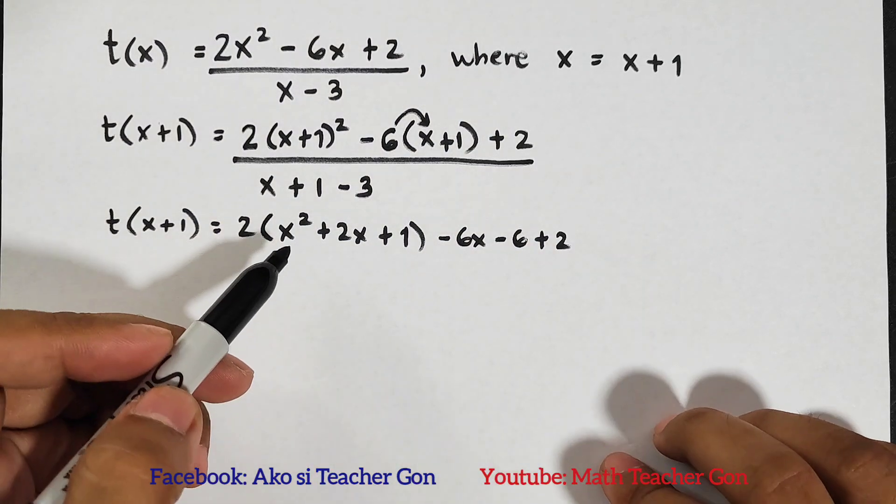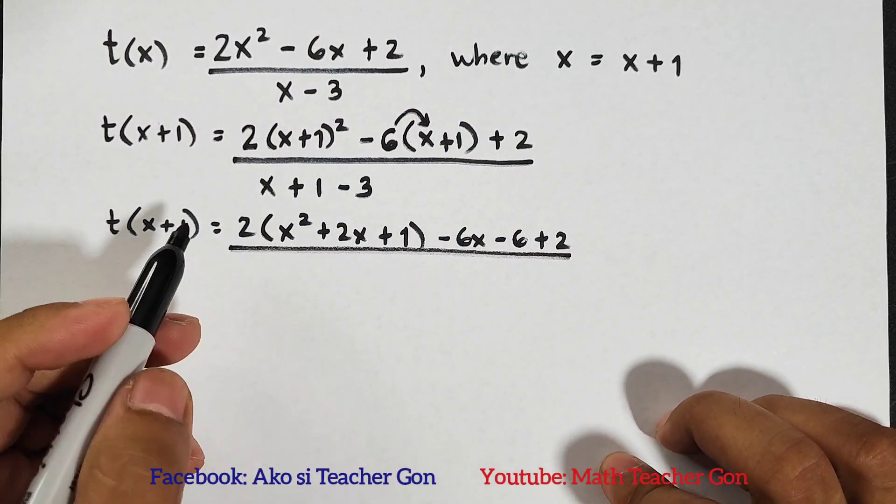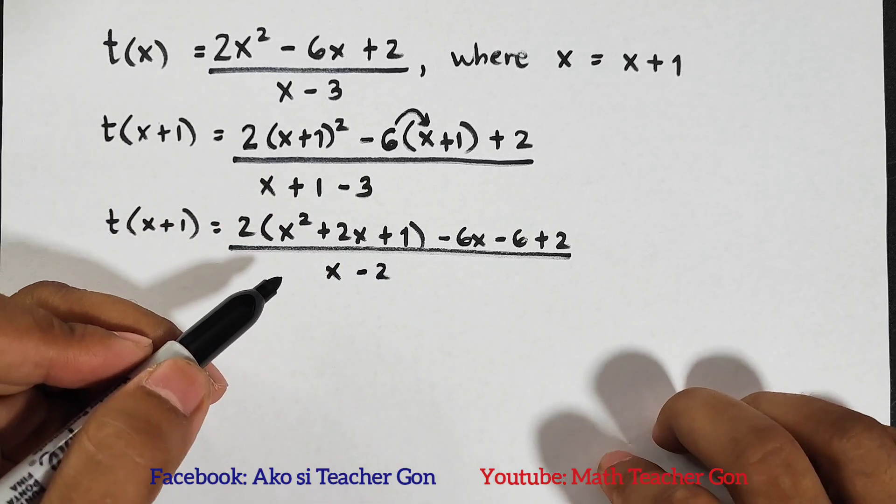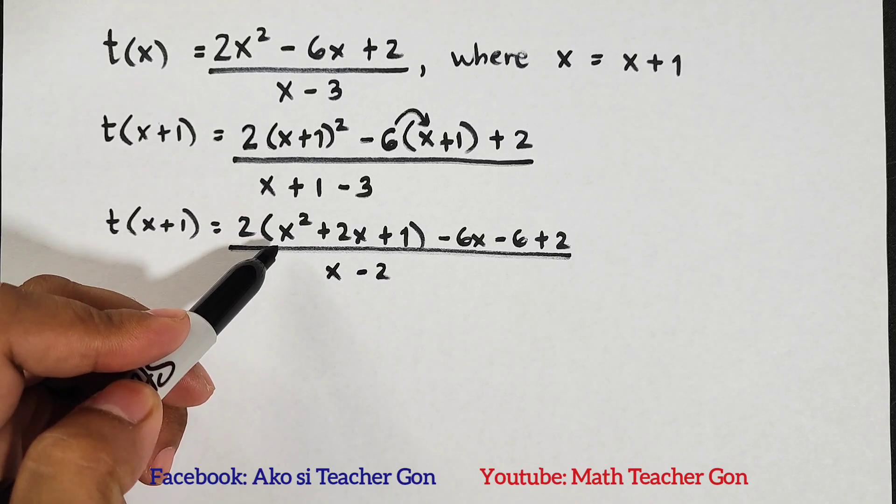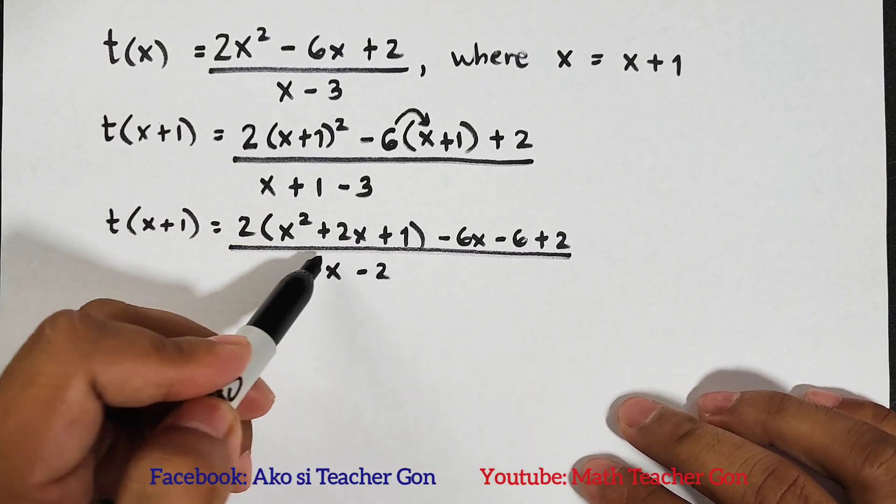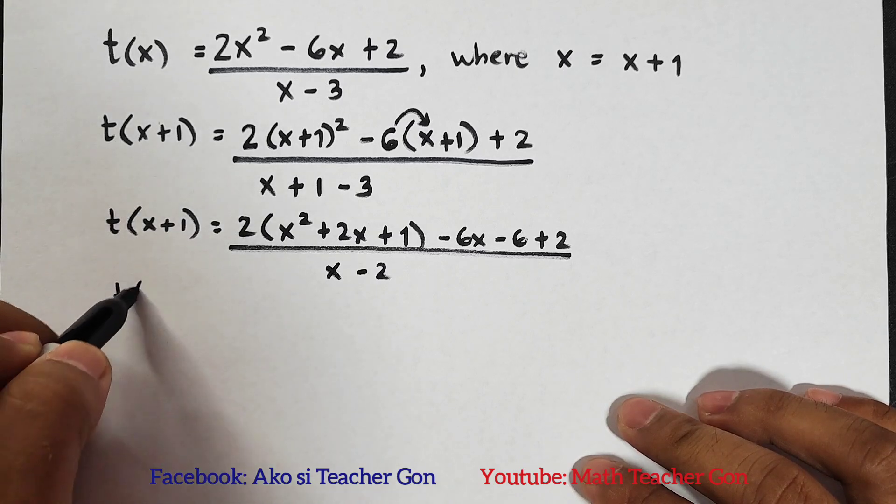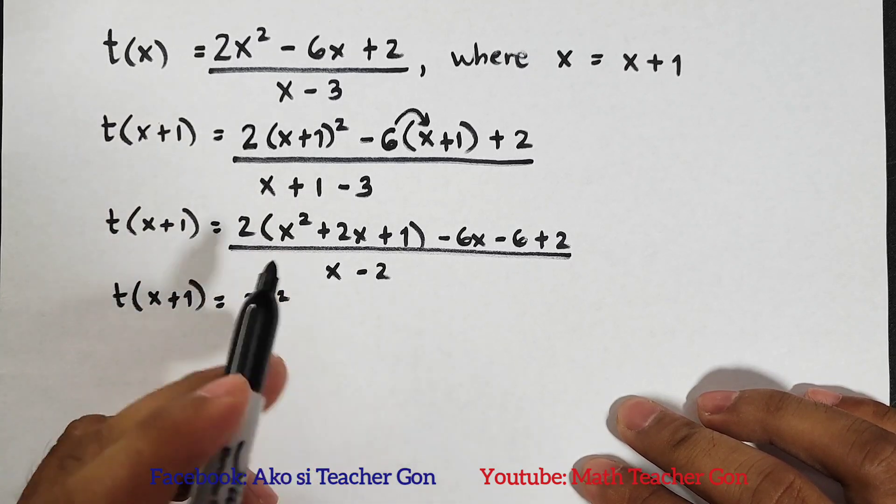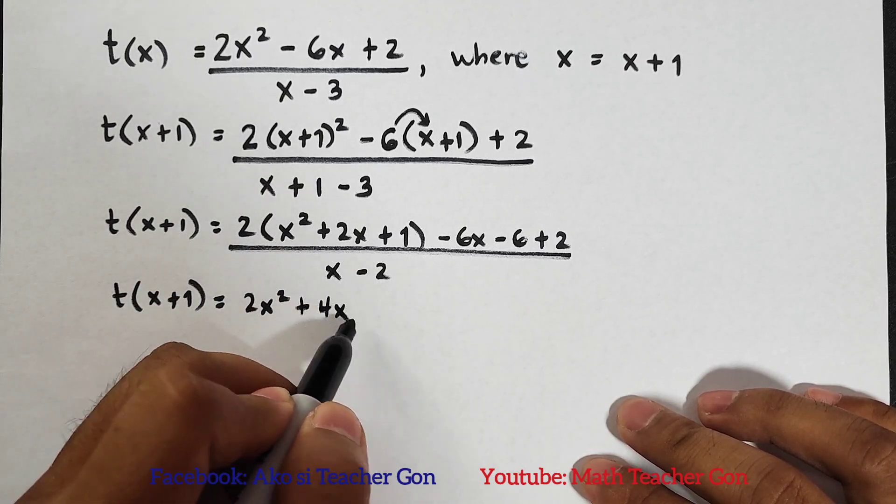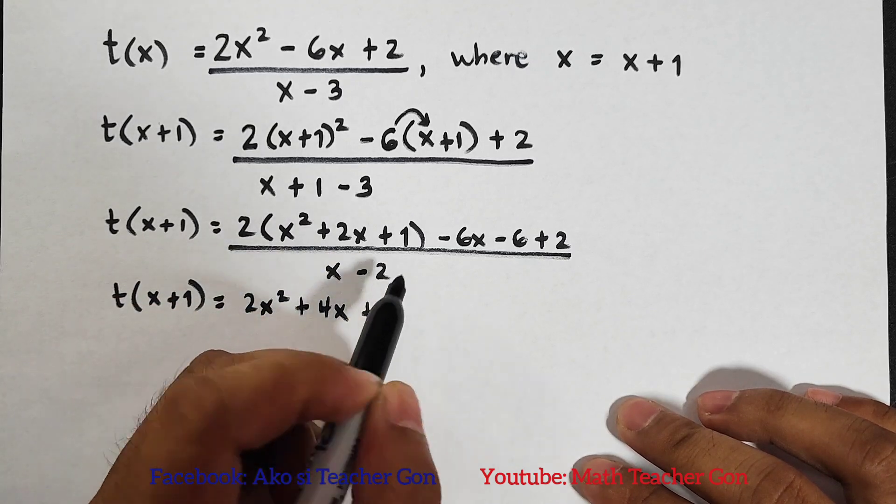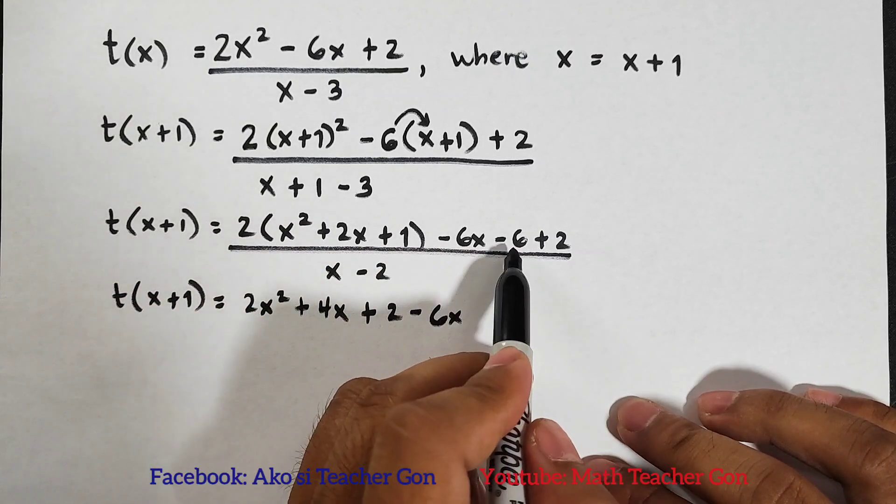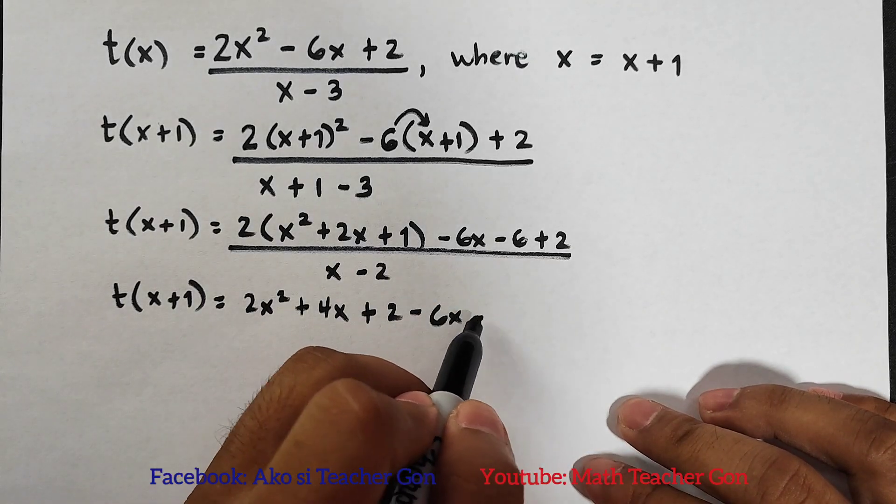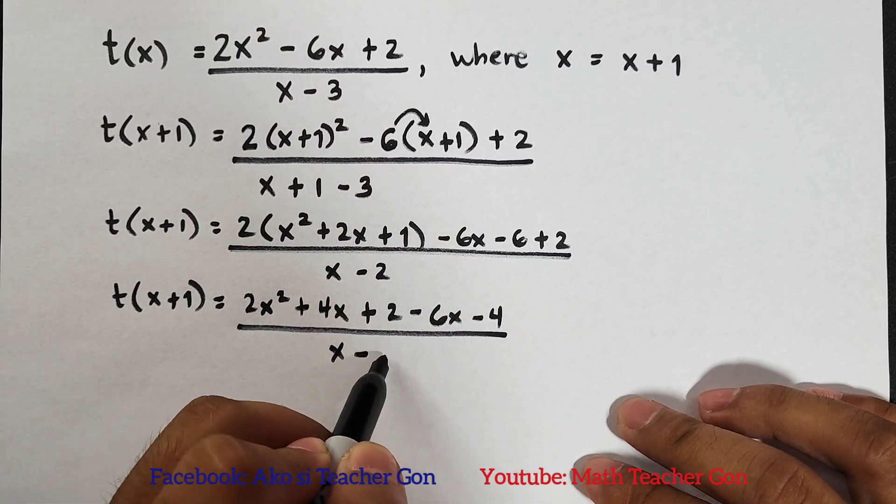Plus 2. Now for your denominator, copy your x and then simplify: 1 minus 3, that is minus 2 or negative 2. For your numerator, we will distribute 2 to this trinomial. 2 times x squared, that is 2x squared. Next, 2 times 2x, that's plus 4x. 2 times 1, that is plus 2. And this is minus 6x, minus 6x. And then we can simplify: negative 6 plus 2, that is minus 4, over x minus 2.